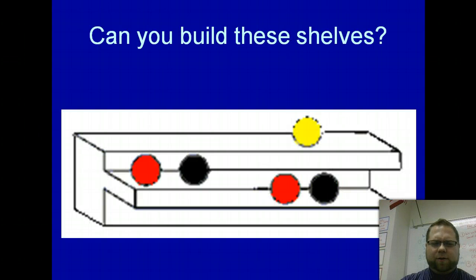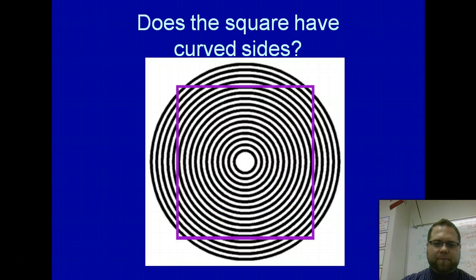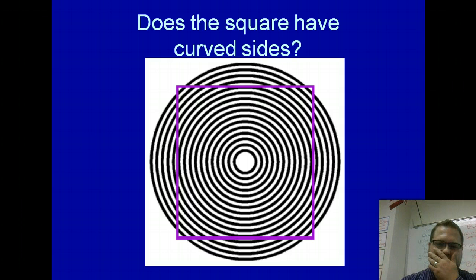Can you build these shelves? Don't have a nosebleed, people — it'll be okay. Does the square have curved sides? Do you see how our observations, if we're not careful, can be tricked?